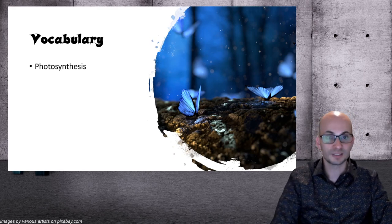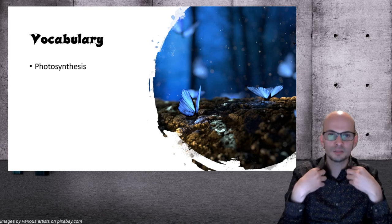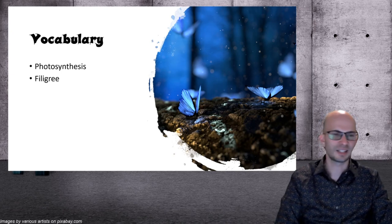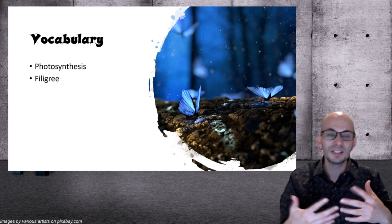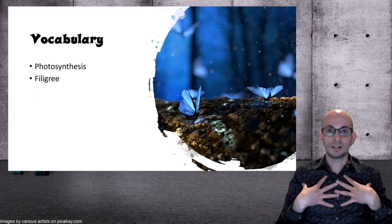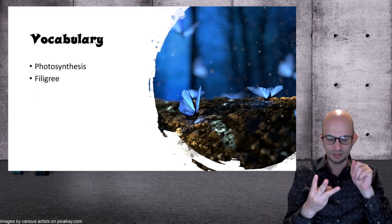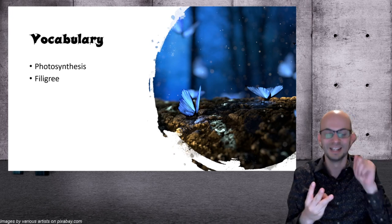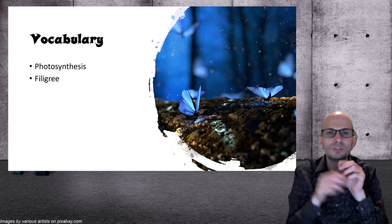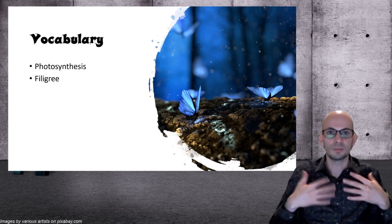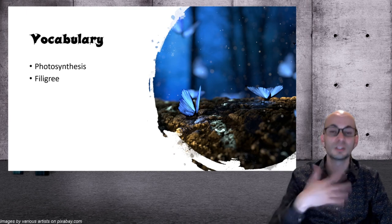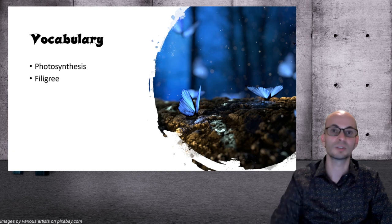Photosynthesis is the way that plants turn light into energy. Filigree is like bubbly or fluffy. If you think about Mallory's dress, it looks almost like foam. The fabric is so detailed that it's almost like bubbles or foam. It's not see-through, but it looks so soft and comfortable. We call that filigree. You can Google it and look at different designs.